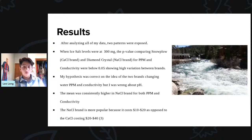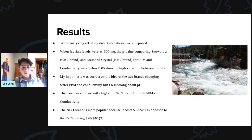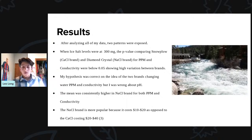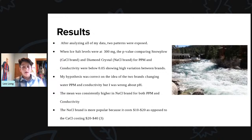After analyzing all my data, two main patterns were exposed. When the ice salt was at 300 milligrams, the p-value comparing the two brands was below 0.05, which showed a high variation between brands. My hypothesis was correct on the idea of the two brands changing water parts per million and conductivity, but it turns out it did not change pH. The mean was consistently higher in NaCl — the sodium chloride brand — for both parts per million and conductivity. And it turns out that the sodium chloride brand is much more popular because it only costs $10 to $20, as opposed to the calcium chloride costing $20 to $40.